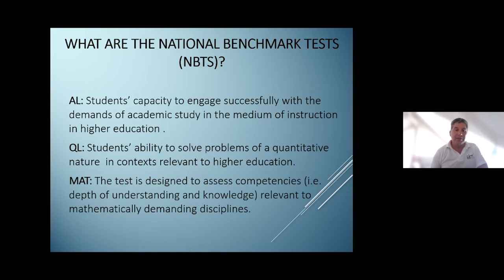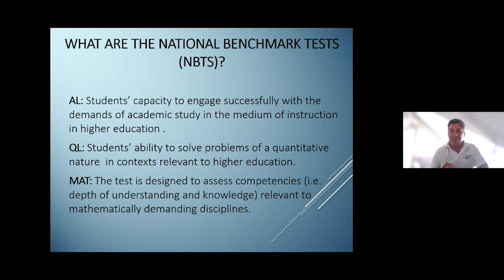Academic Literacy (AL) measures a student's capacity to engage successfully with the demands of academic study in the medium of instruction in the higher education context. Quantitative Literacy is the student's ability to solve problems of a quantitative nature in contexts relevant to higher education. And Mathematics (MAT) is designed to assess competencies — depth of understanding or knowledge relevant to mathematically demanding disciplines, for example the types of mathematical operations you would expect to meet in science courses.